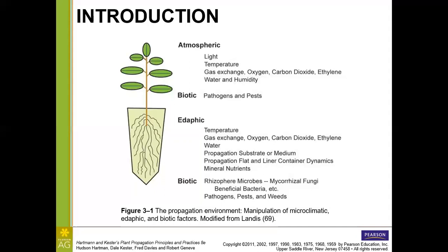The propagation substrate or medium is different than what we see for the foliage. This could be our peat, our rock wool, potting soil. And then also the dynamics of the flat and the liner. When you look at the shape of the vessel that's holding the roots — imagine a tiny pot for propagation — this is common for the woody plants. One thing you'll notice is that there is a very small diameter for the depth of this vessel, so it allows the roots to grow pretty deep but not really wide.